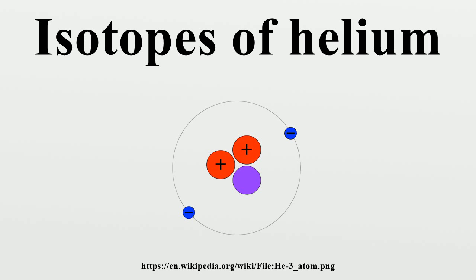Helium-2, also known as a diproton, is an extremely unstable isotope of helium that consists of two protons without any neutrons.